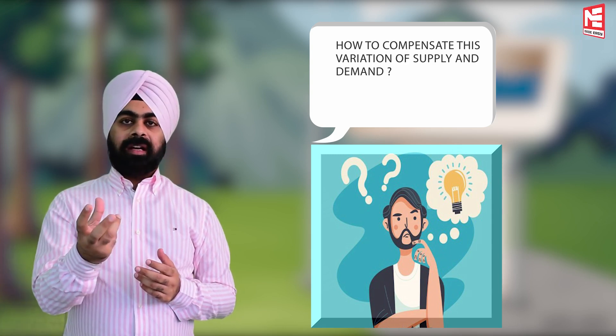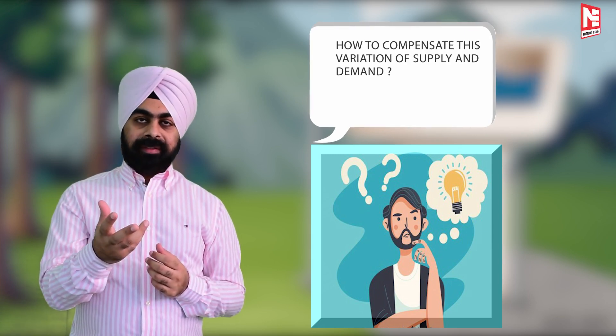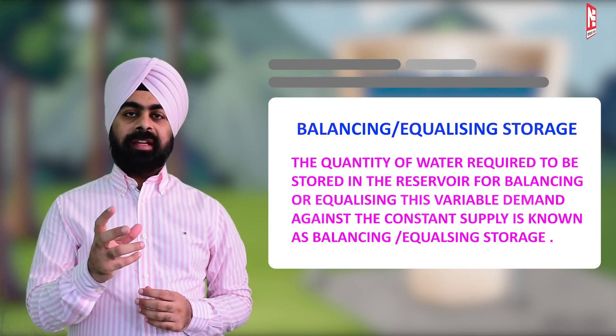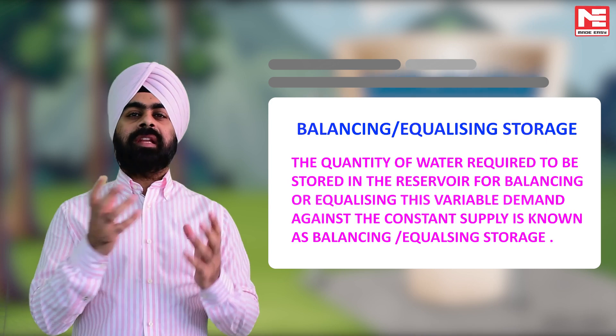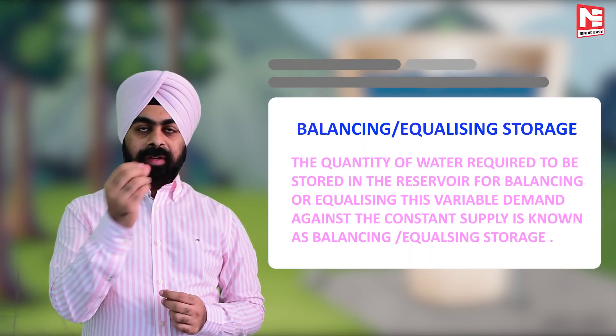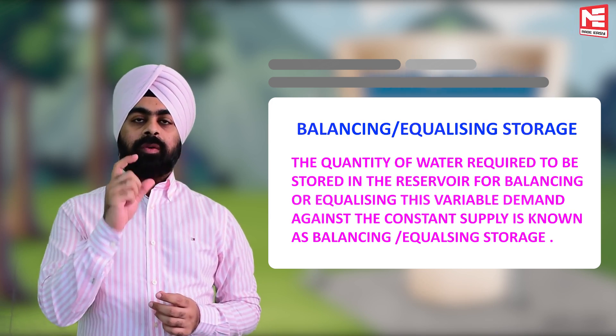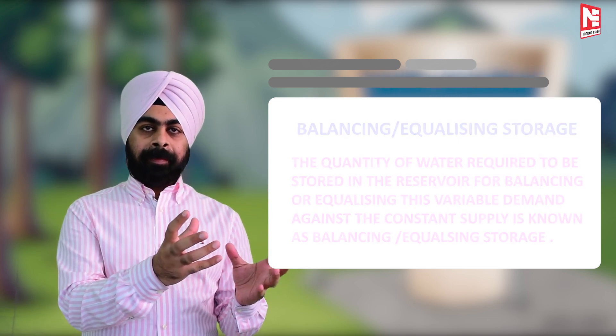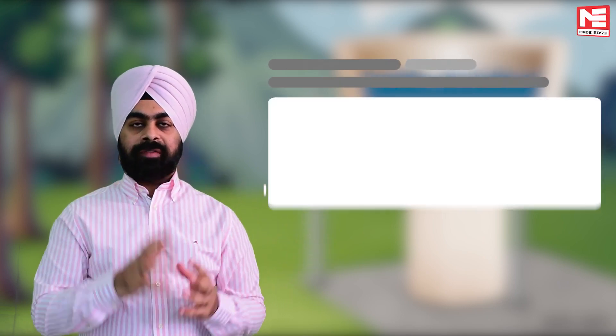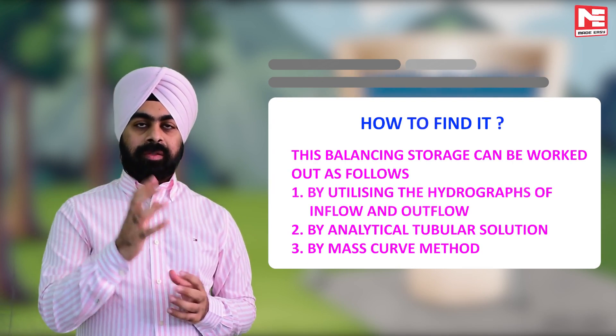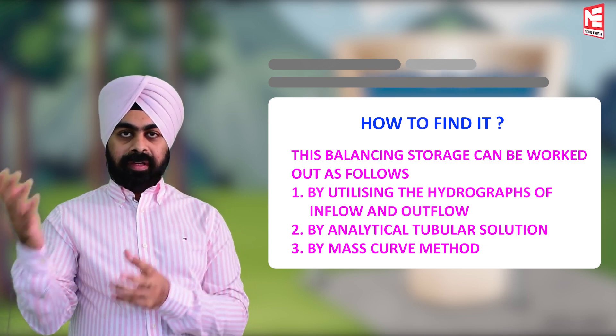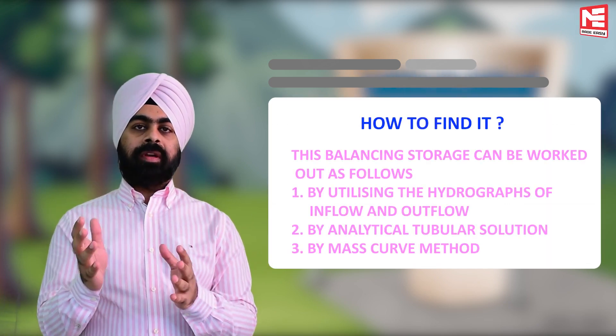Now the point is how to compensate for this variation of supply and demand. The answer to this problem is balancing or equalizing storage, which is the amount of water required to be stored in the reservoir to balance or equalize the fluctuating demand against the constant supply. Among various methods like the hydrograph of inflow and outflow, analytical tabular solution, and the mass curve method, in today's session we will be talking about the mass curve method.